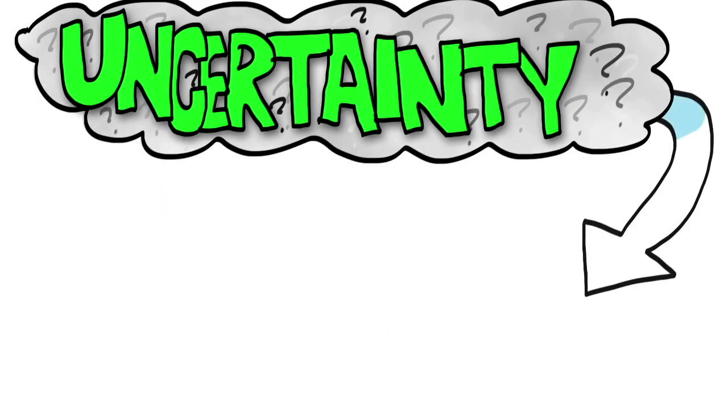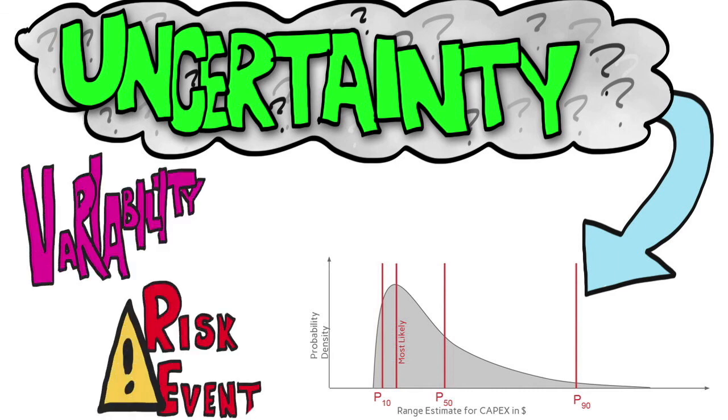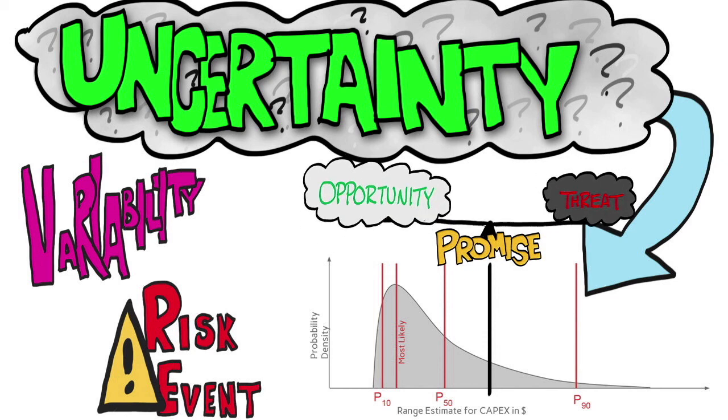We can discuss the uncertainty of an estimate using a range estimate. We can evaluate the sources of the uncertainty, namely variability and risk events. We can even collapse the range estimate by setting a promise that seems to properly balance the opportunity of doing better versus the threat of doing worse.